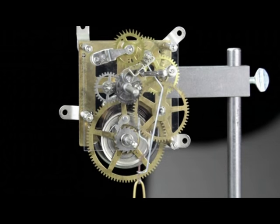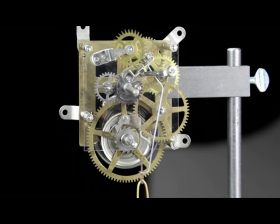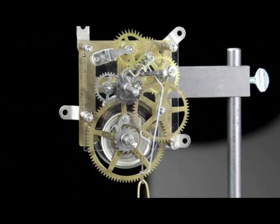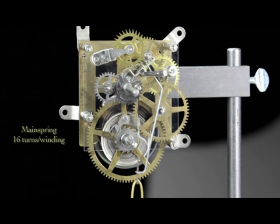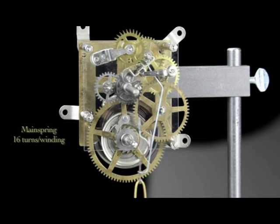Another function of the wheel train is to gear up the relatively few turns of power stored in the mainspring, usually around 16 full turns, so the clock will operate a full eight days on one winding.